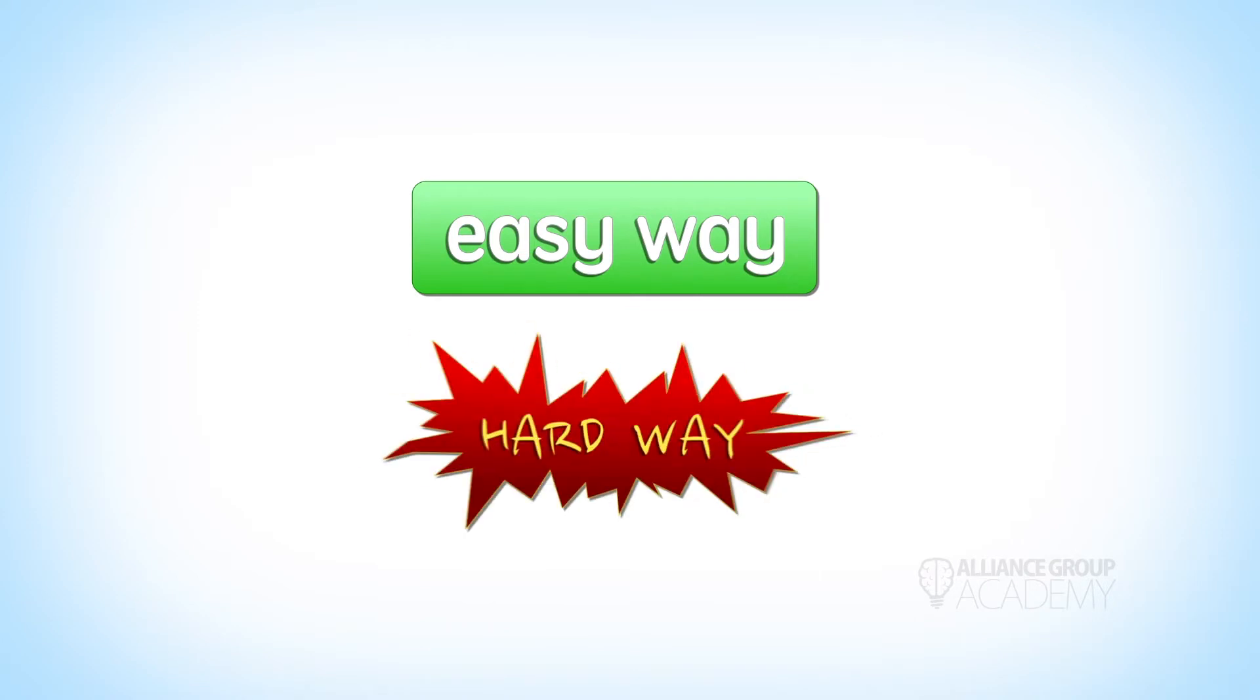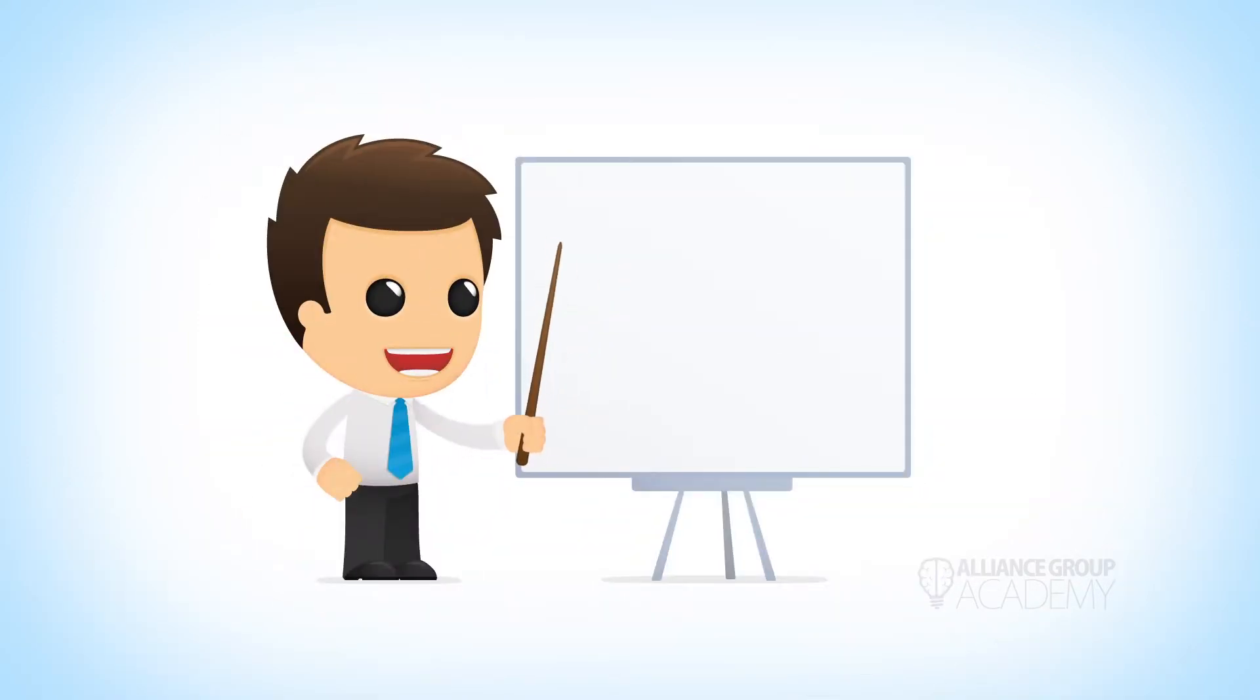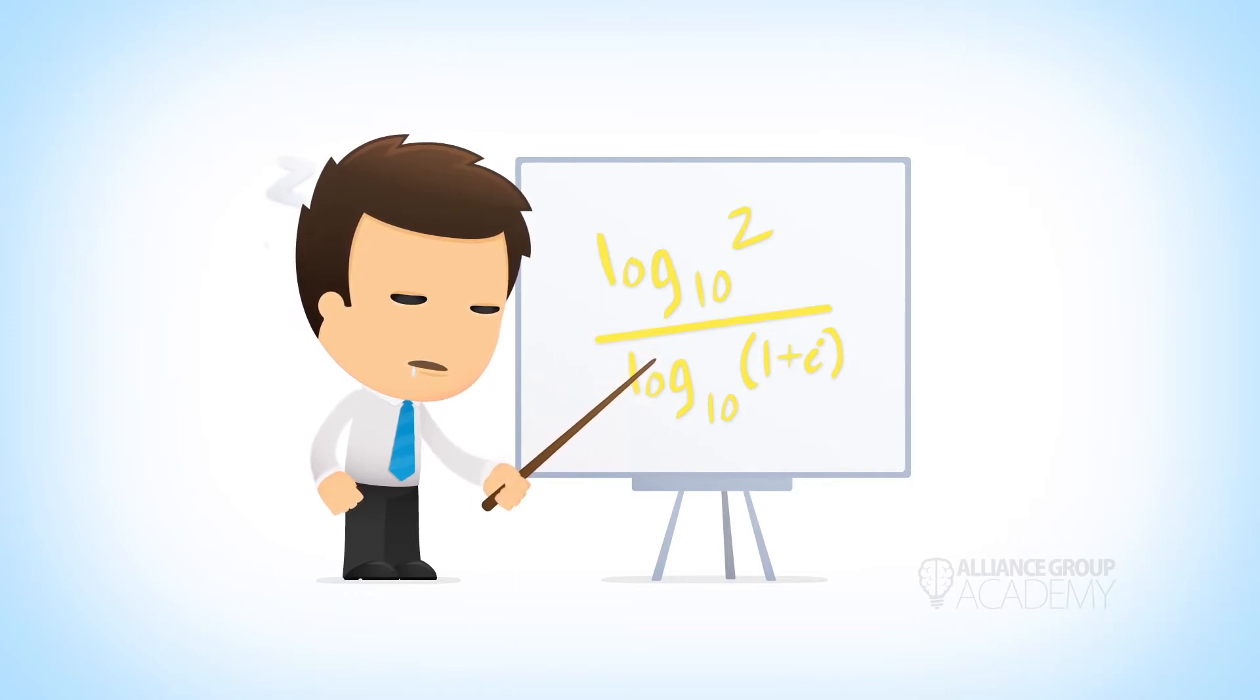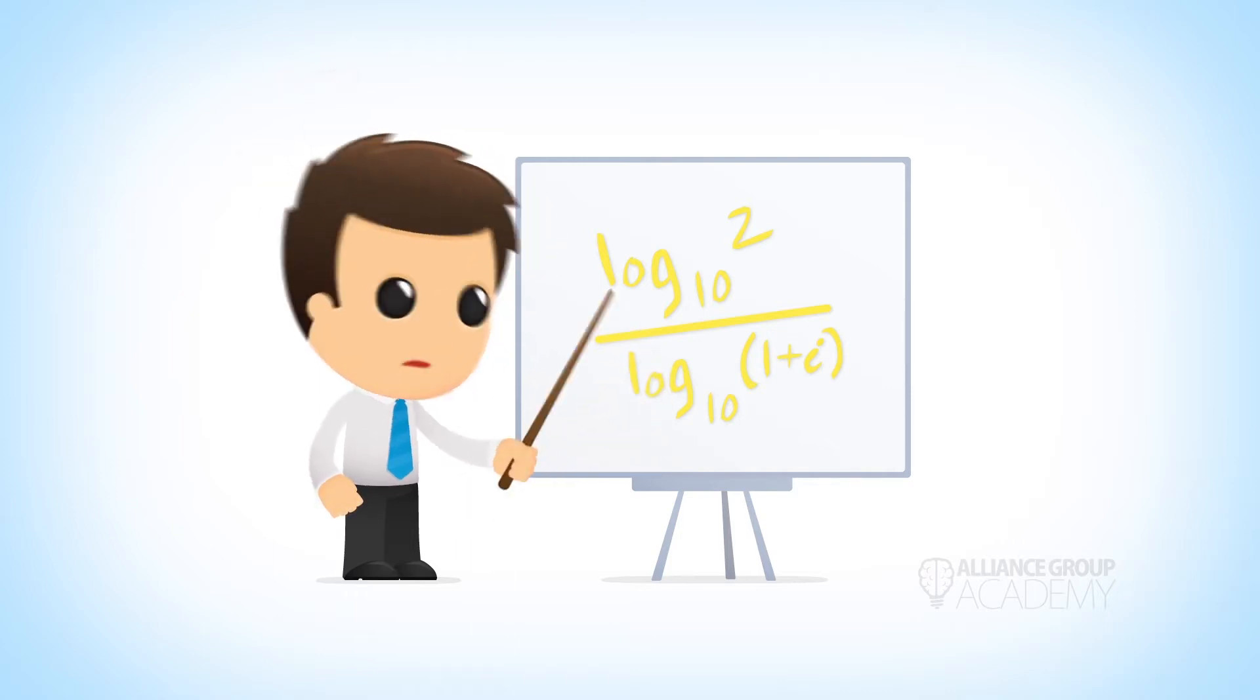The hard way involves taking the logarithm base 10 of two (two as in two times our balance) over the logarithm base 10 of one plus our interest rate. Since most of us don't have bionic brains, we can't really do this math in our heads. But our friend Larry is here and he's gonna give it his best shot. We'll get back to him later.